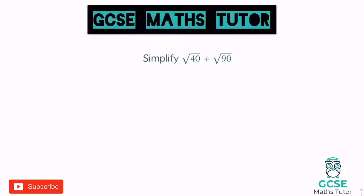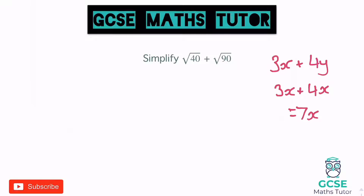We've got the square root of 40 plus the square root of 90, and I like to link this back to algebra. If we think about something like 3x add 4y, hopefully we know that we can't actually add those together - we just leave it as it is. But if we have 3x add 4x, they can combine to make 7x. The reason they can add together is because they share that common letter x. We're going to take the same approach with surds: if we can have the same number underneath the square root, then we can add them together. At the moment it's a 40 and a 90, so they don't add directly.